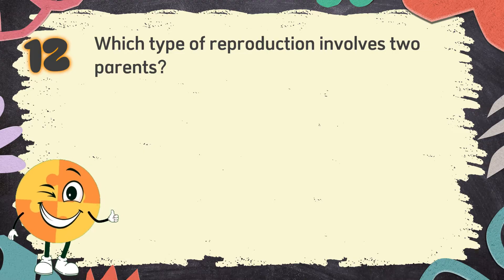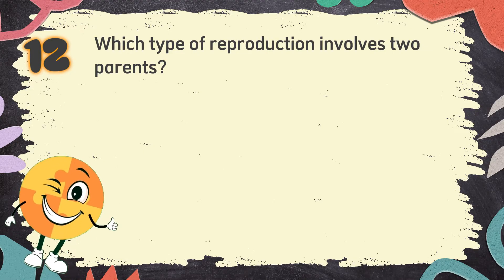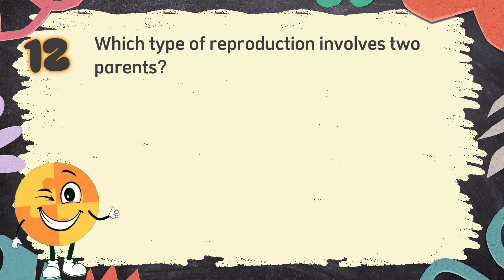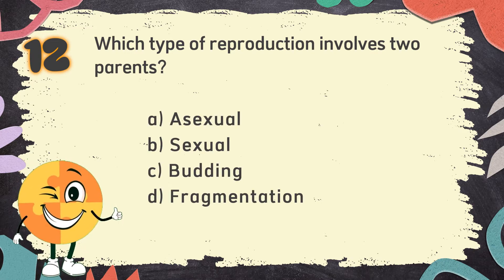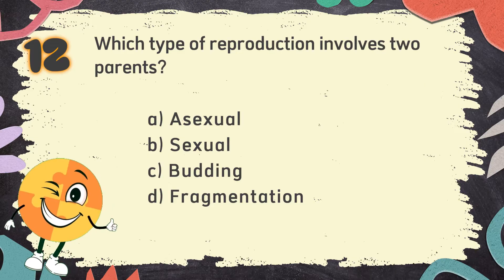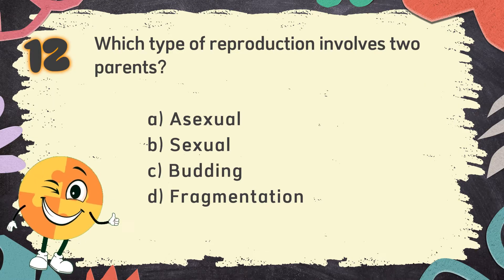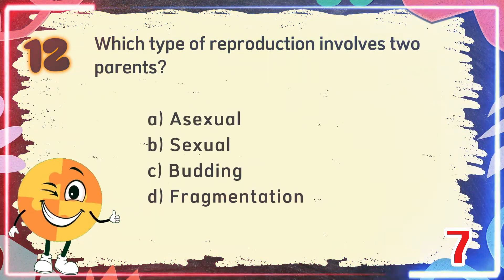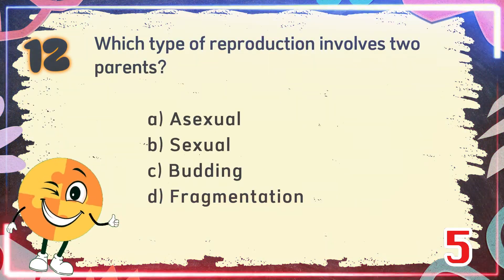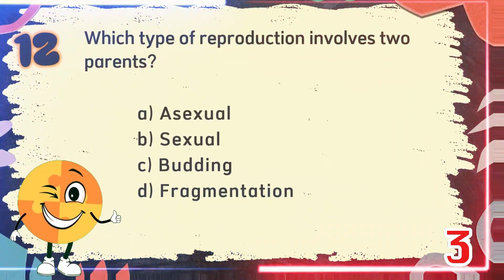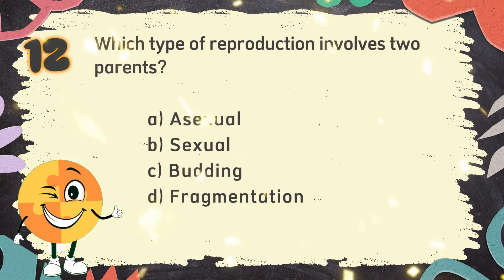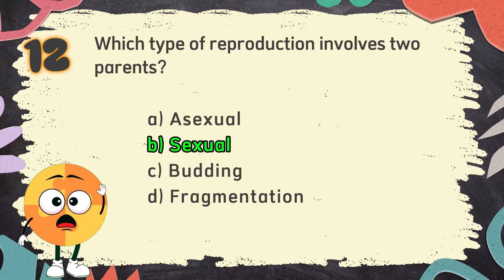Number 12: Which type of reproduction involves two parents? The choices are: A. Asexual, B. Sexual, C. Budding, D. Fragmentation. The correct answer is B. Sexual.